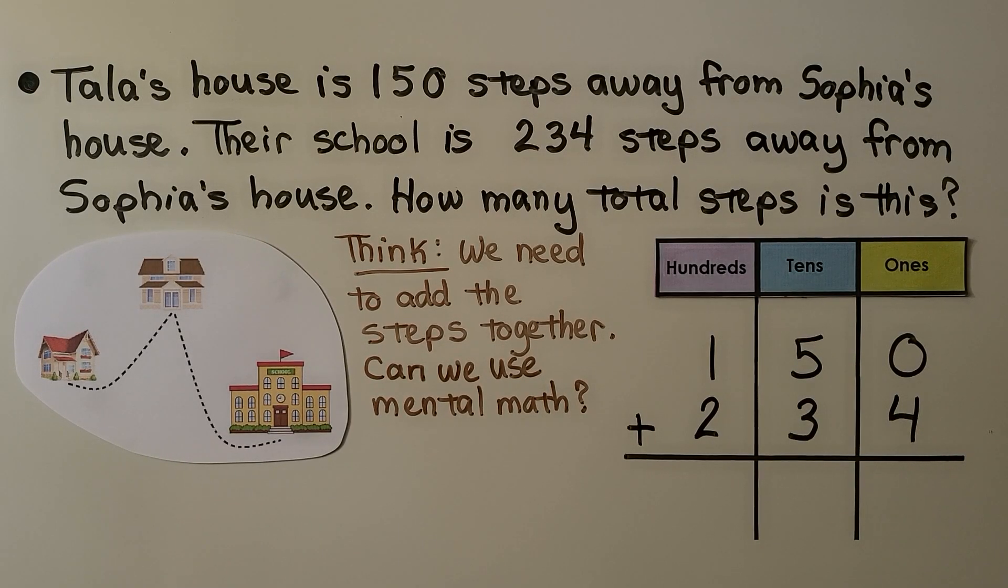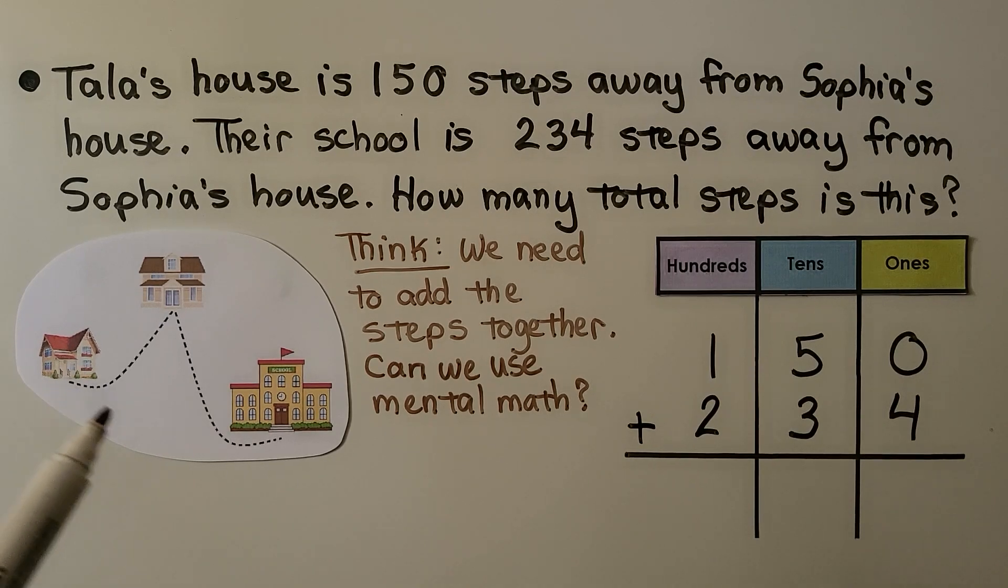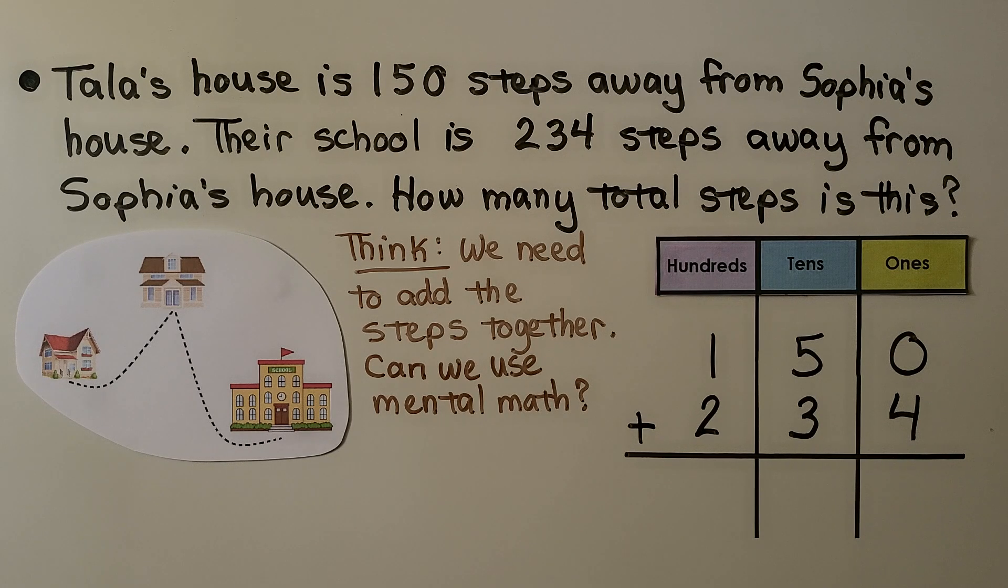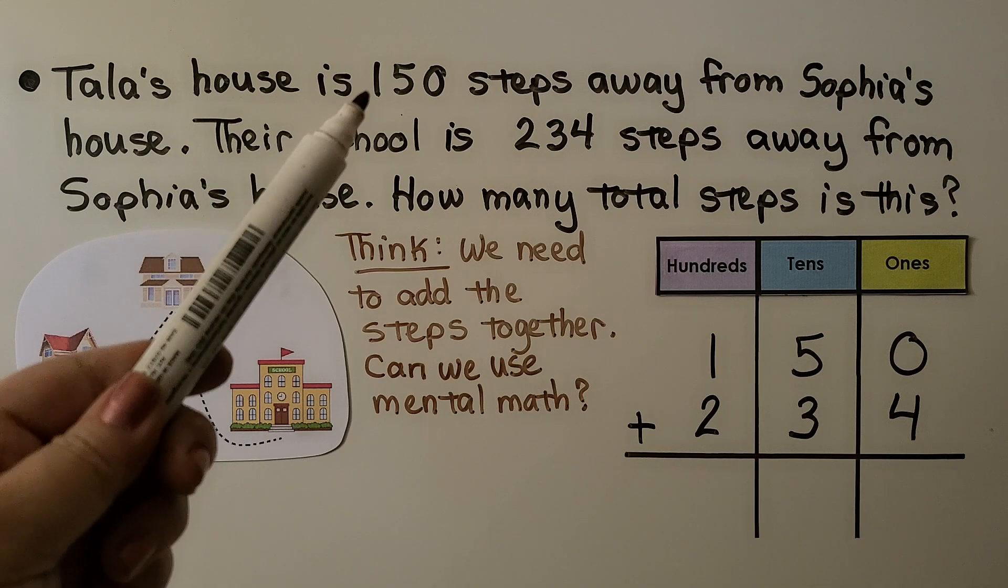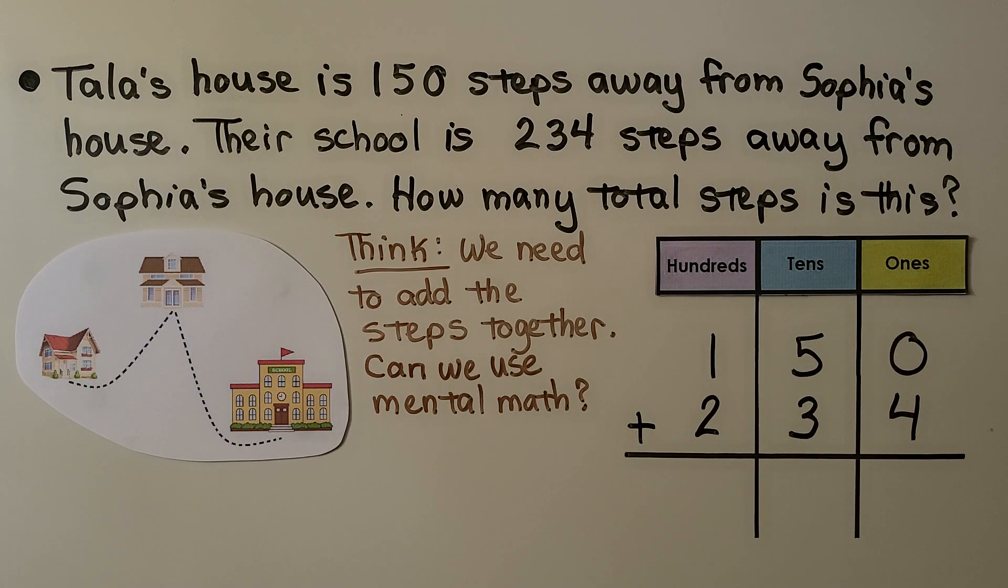Tala's house is 150 steps away from Sophia's house. Their school is 234 steps away from Sophia's house. How many total steps is this? We think we need to add the steps together. Can we use mental math? We have 150 plus 234. Could you add that with mental math?